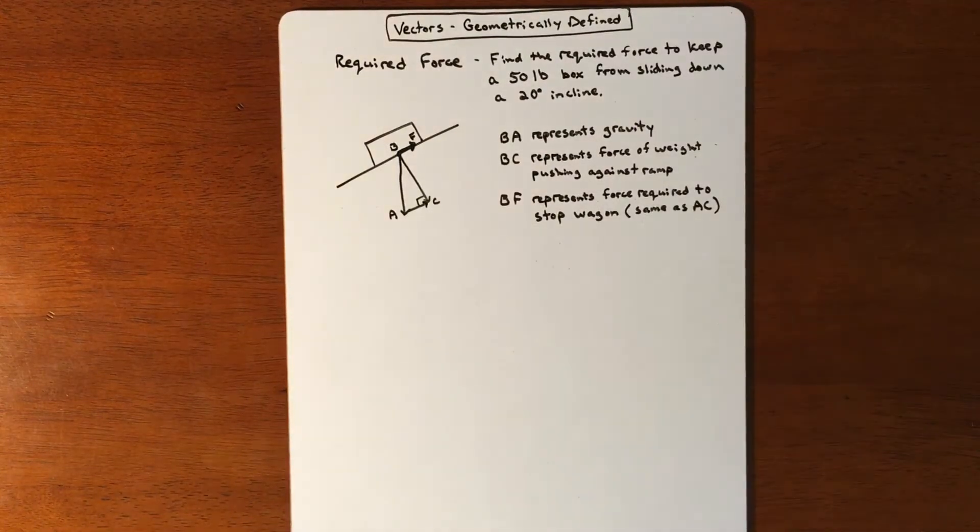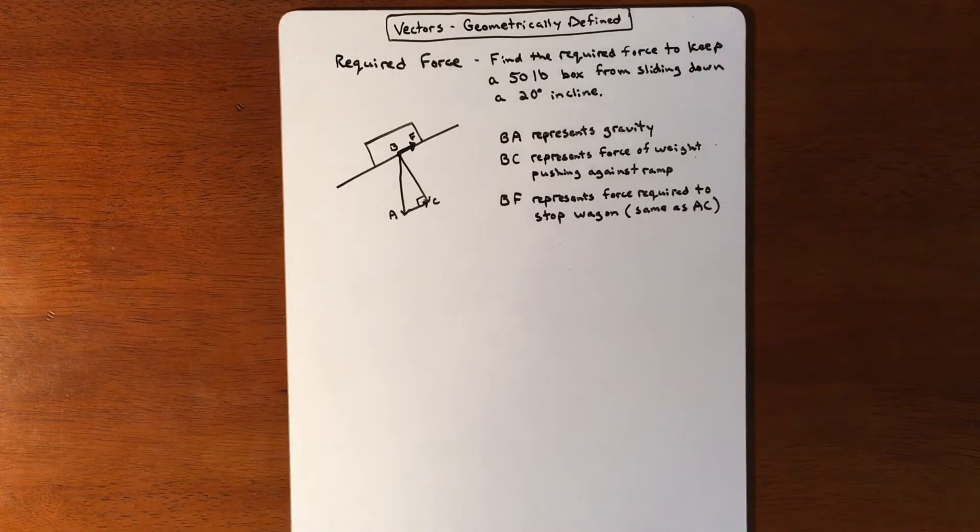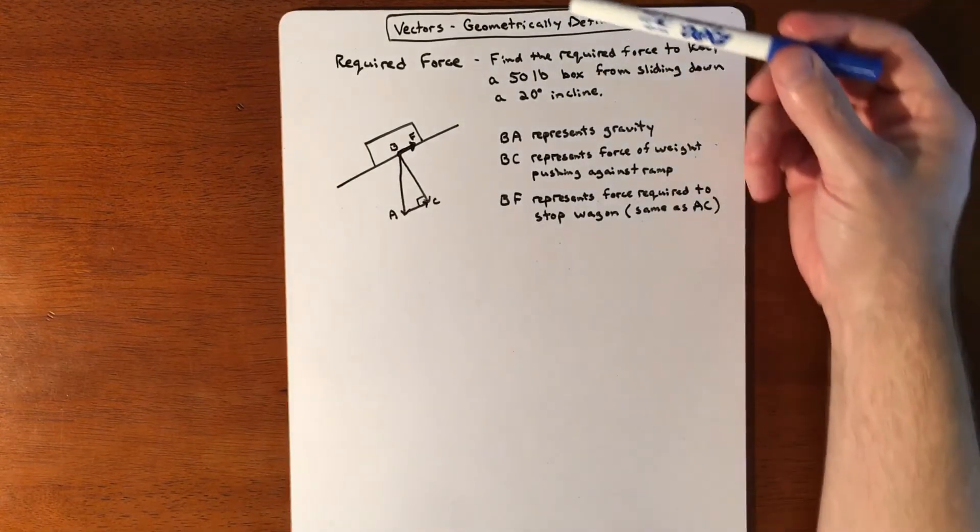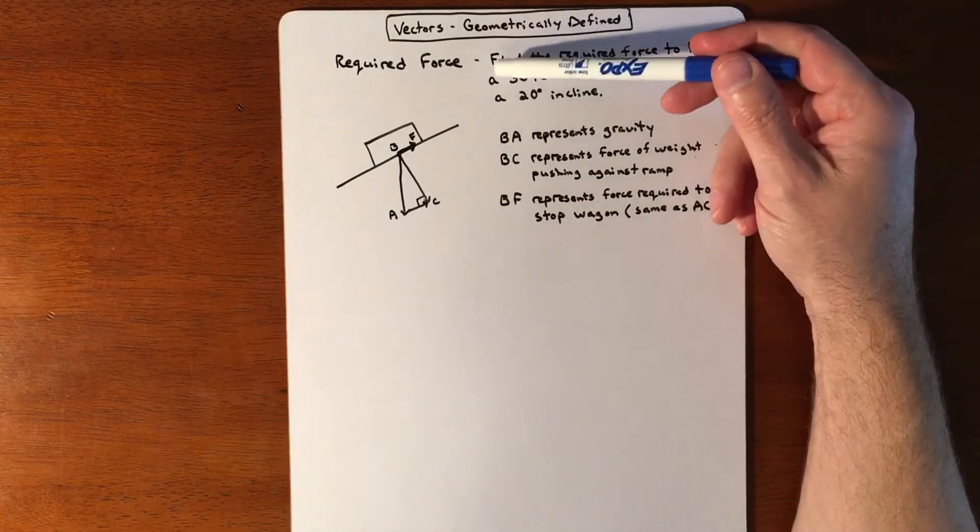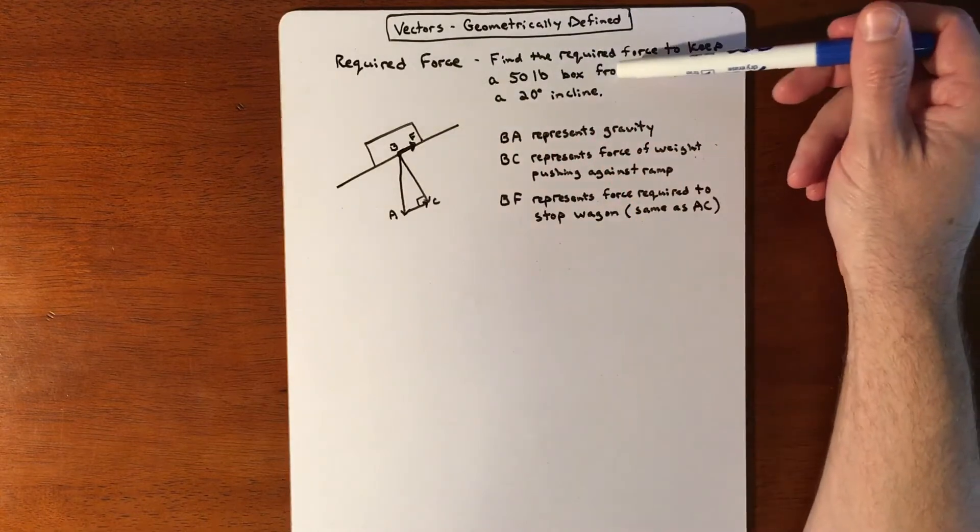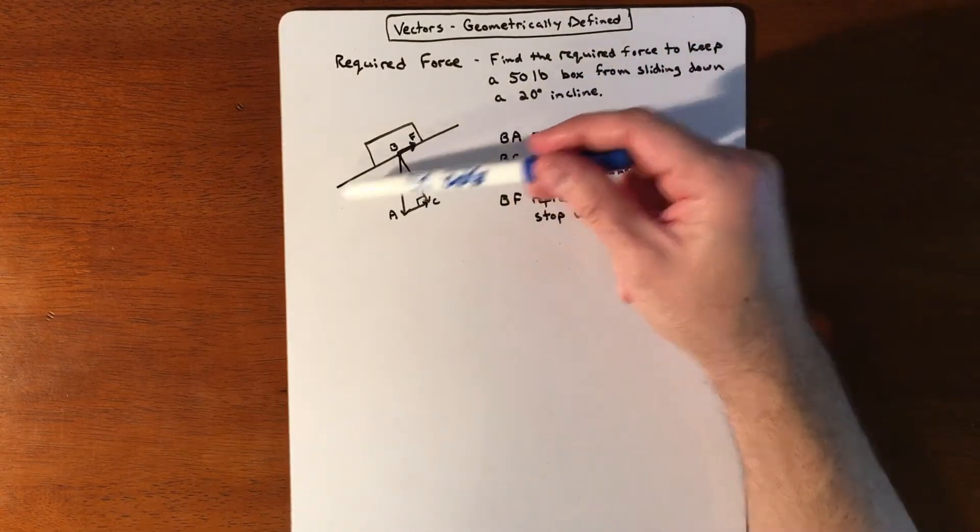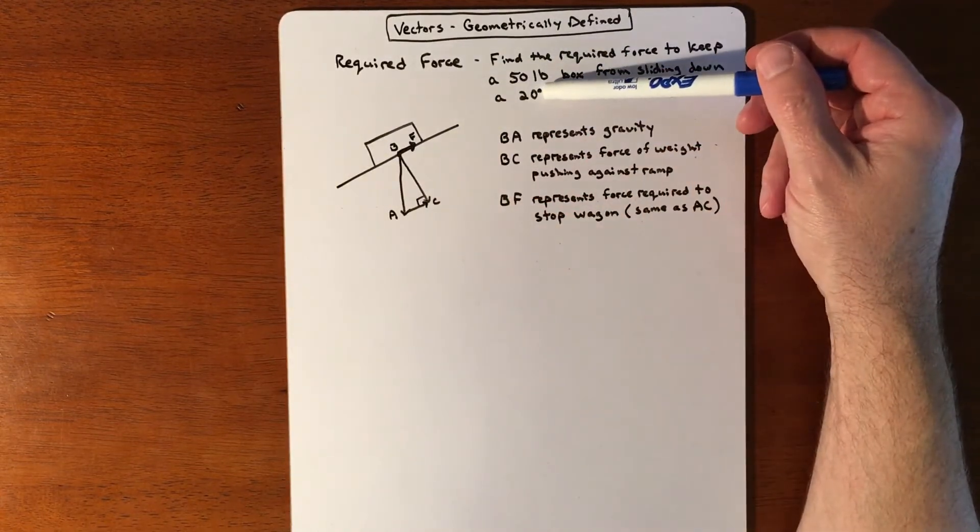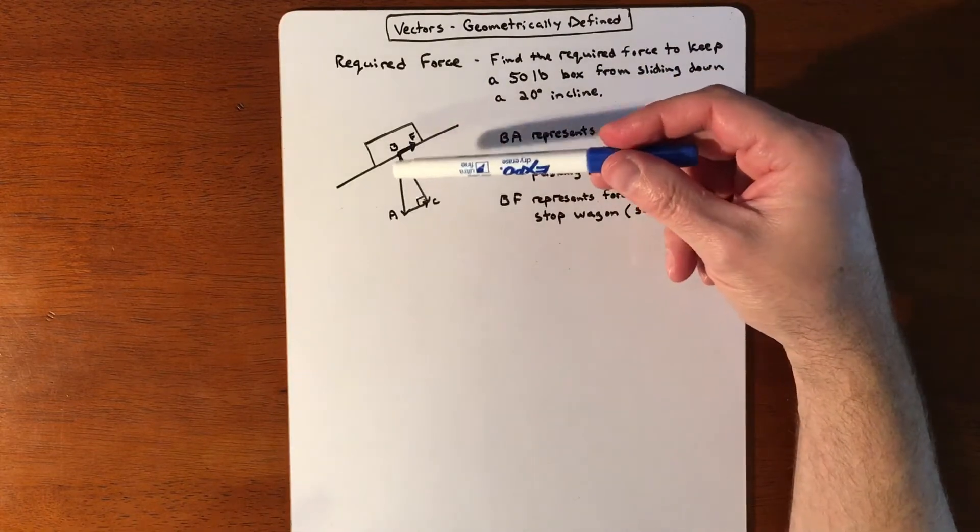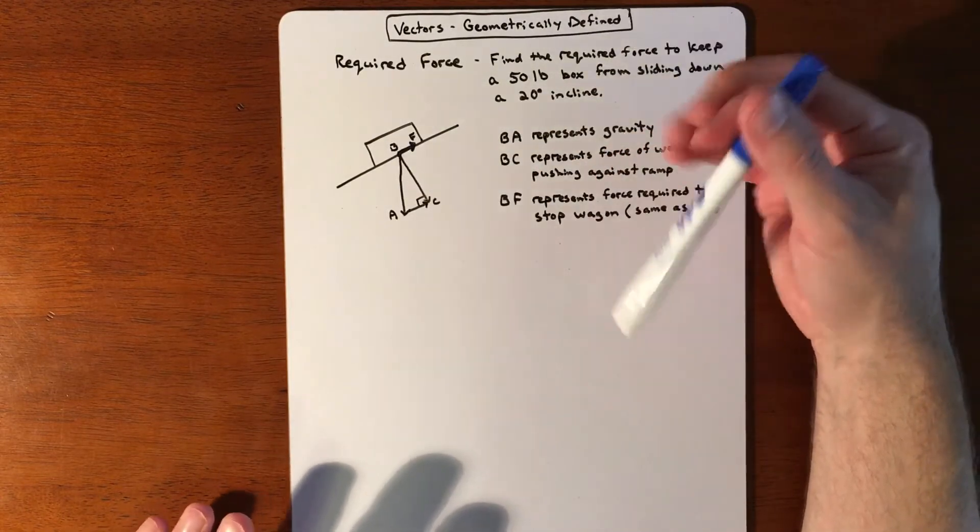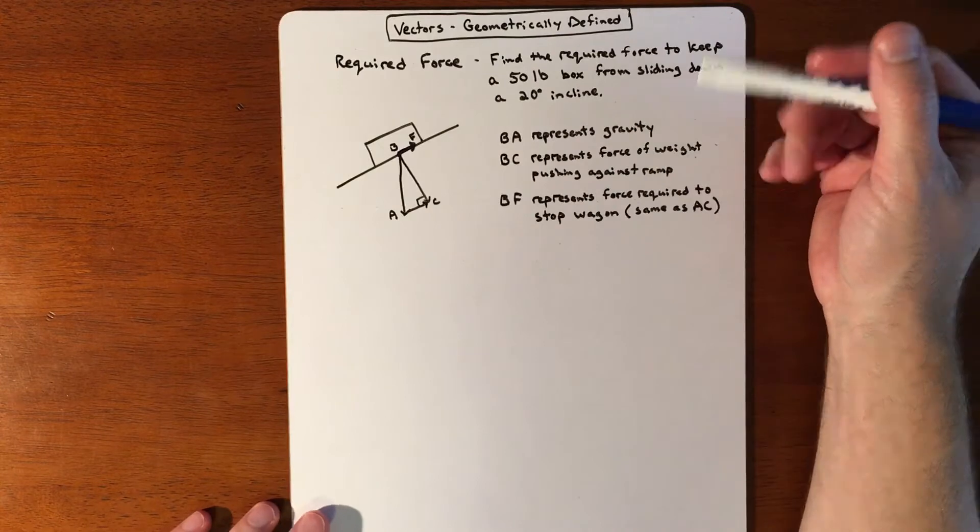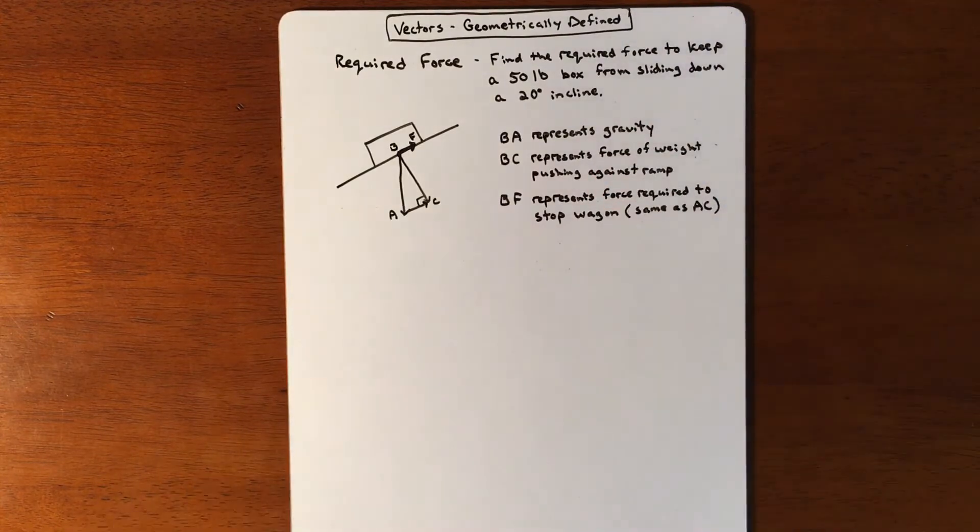In this example, we're looking to find the required force to keep a 50-pound box from sliding down a 20-degree incline. This is not going to account for friction and all sorts of physics things, so it's just a very basic general idea.